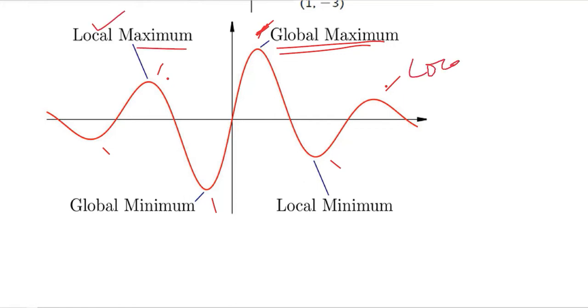This is also a local maximum because locally it is at the highest point, and not from all over all the points. And then we have the minimum. This is the lowest minimum, so we call it the global minimum. This is the local minimum, which is at a lowest point but not the lowest point, and this is also a local minimum.